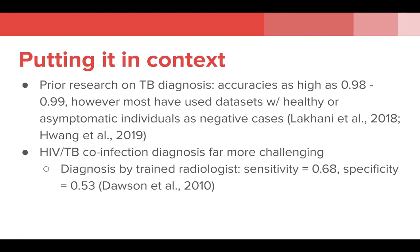It's worth mentioning that there's been some prior work in applications of deep learning in the diagnosis of TB and identifying characteristic findings in chest radiographs, with some reporting considerable success with AUCs as high as 0.98 to 0.99. However, these have largely utilized datasets composed of healthy or asymptomatic screening populations in addition to active TB cases, meaning almost any chest x-ray with an abnormal finding could be easily classified as a case. This is a considerably easier problem than the diagnosis of TB in HIV-positive patients, where expert performance has been reported with sensitivities and specificities as low as 0.68 and 0.53 respectively.